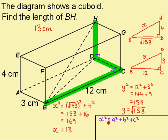So this gives me 12 squared plus 3 squared plus 4 squared. If I work this out I get 169 and then I can find x by square rooting and I get 13.